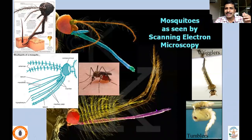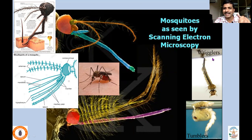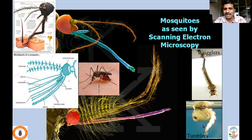Adult female mosquitoes lay eggs in aquatic ecosystems, where the maggots feed on algae, fungi, and other materials present in water bodies. These larvae are called wrigglers because they wriggle their bodies, whereas when they pupate, they are called tumblers.